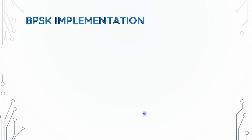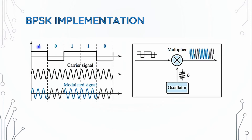Let's see the implementation of BPSK. When we have a 0 bit, the signal starts at around 180 degrees in phase. The carrier signal and the modulator signal are multiplied together to produce the output signal.